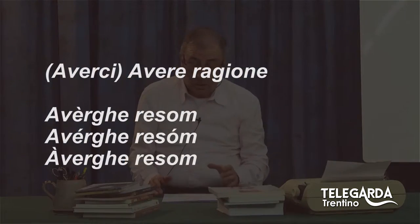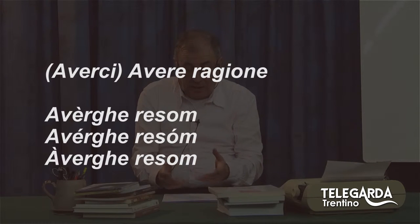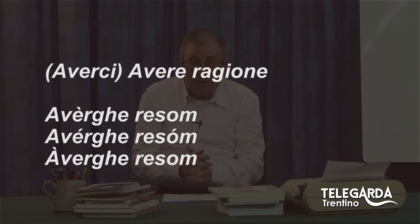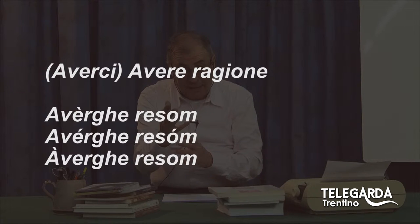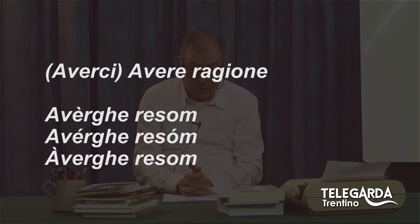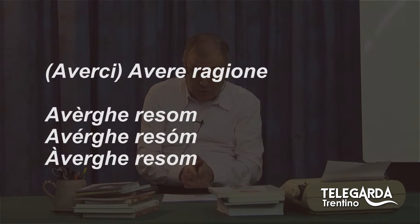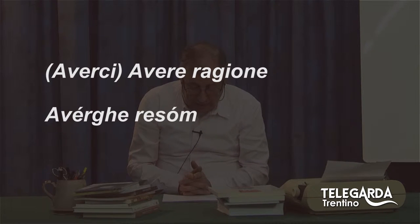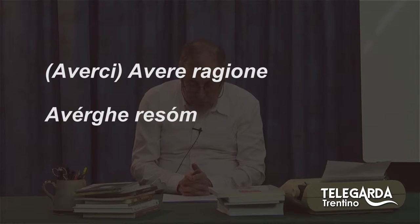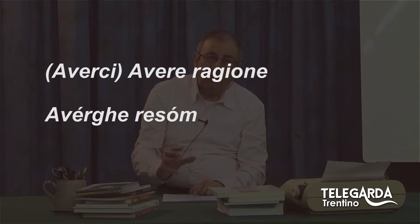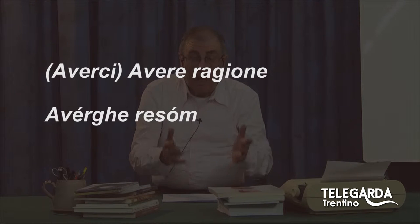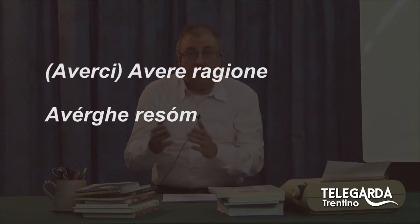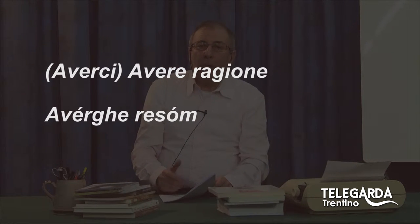Partiamo col primo esempio: avere ragione, o averci ragione, nel senso che quel 'ci' indica avere ragione riguardo a qualche cosa. La soluzione corretta è la seconda: 'averghe resom'. Vedete quella E con accento tonico chiuso, e 'resom' con una bella O chiusa. Quel 'ghe' sta per quel 'ci'. Altrimenti avere ragione sarebbe semplicemente 'aver resom' o 'gaver resom'. Il 'verghe' serviva per rendere l'indovinello un po' più difficile.